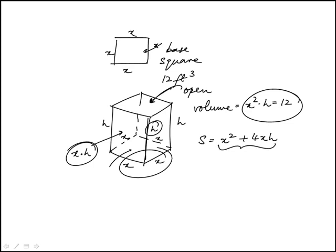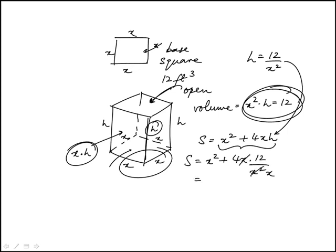So we need to express this in terms of x. I can isolate h here. h is 12 over x squared. I can replace that here, so this would be 12 over x squared. That x knocks out. I'm left with x squared plus 48, 12 times 4, over x.